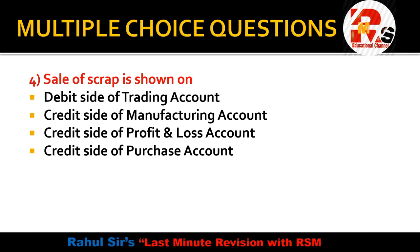Question four is from the chapter of Final Accounts. Sale of scrap — options are: debit side of trading account, credit side of manufacturing account, credit side of profit and loss account, or credit side of purchase account. Sale of scrap means we sell scrap material and get money. Getting money means it is income for the organization, so it will be on the credit side. The right answer is credit side of manufacturing account, as sale of scrap generated during manufacturing is credited there.